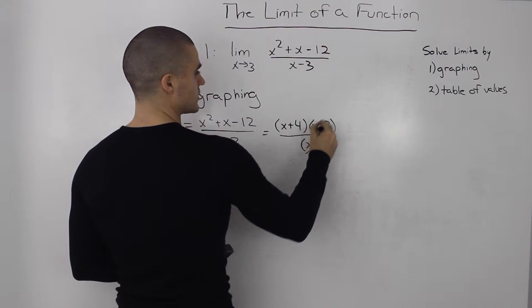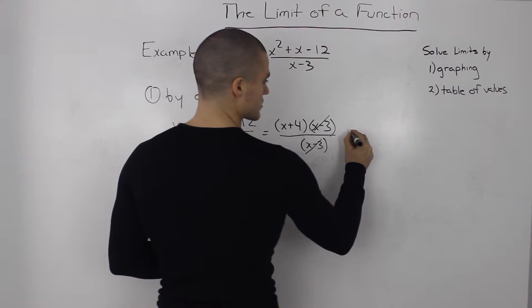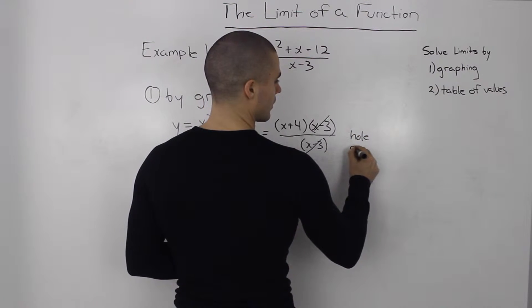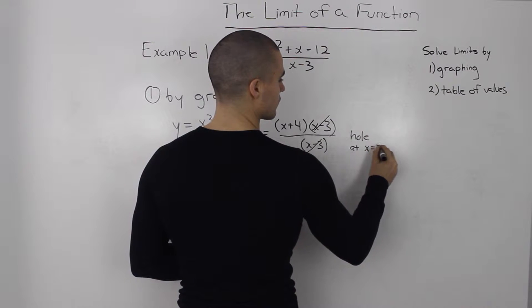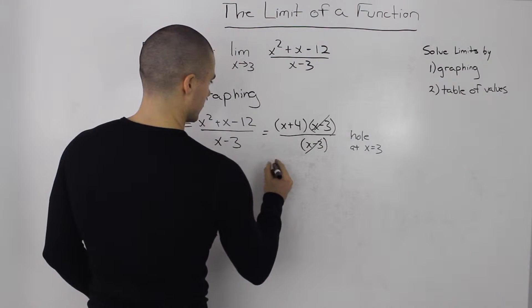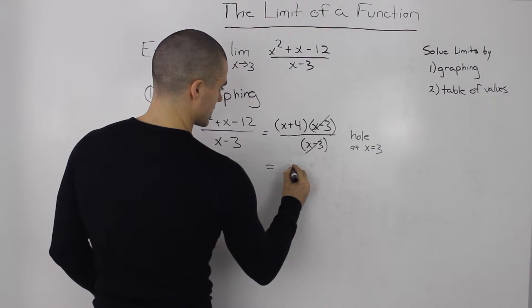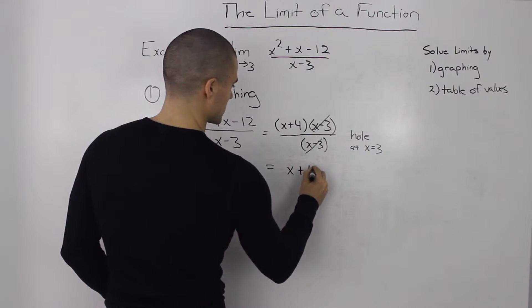The x minus three terms cancel out, which means there's a hole at x equals three. After the x minus threes cancel out, we're just left with x plus four.